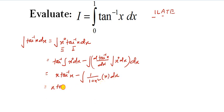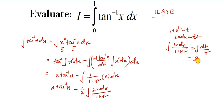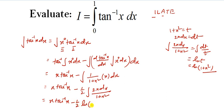This becomes x·tan inverse x minus one-half times the integral of 2x dx divided by (1 plus x squared). Here we multiply and divide by 2. Because if we let t = 1 plus x squared, then dt = 2x dx. So the integral of 2x dx over (1 plus x squared) becomes the integral of dt over t, which is ln t, that is ln(1 plus x squared). So we can write: x·tan inverse x minus half of ln(1 plus x squared).